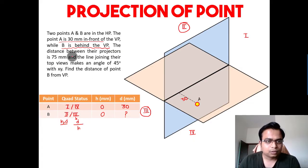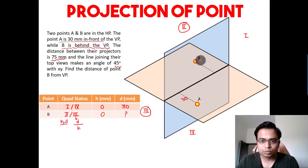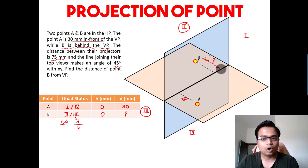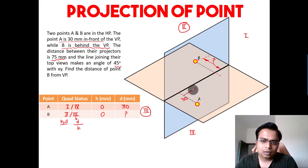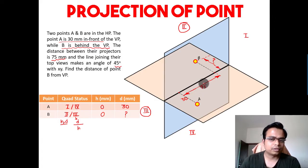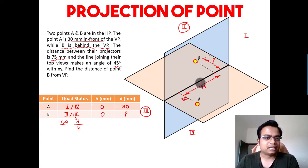That's not all — there's more data. The distance between their projectors is 75mm. The distance of point B from the vertical plane is unknown and is something we need to work out. Let me mark that as a question mark. The distance between the projector of A and the projector of B is 75mm.